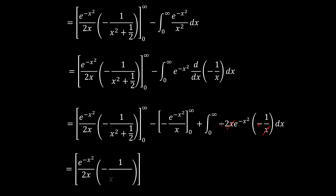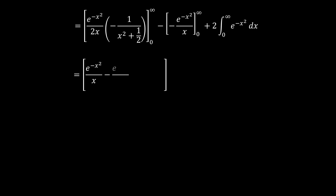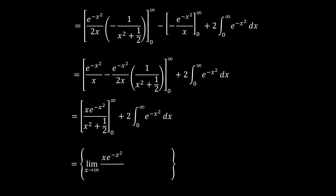So we now have, very interestingly, the first boundary parts kept as they are, plus 2 times the integral from 0 to infinity of e to the power negative x squared. Combining the boundary terms, we get e to the power negative x squared over x minus e to the power negative x squared over 2x times 1 over (x squared plus one half), all with limits applied — which equals the limit as x tends to infinity of x times e to the power negative x squared over (x squared plus one half), minus the limit as x tends to 0 of the same.